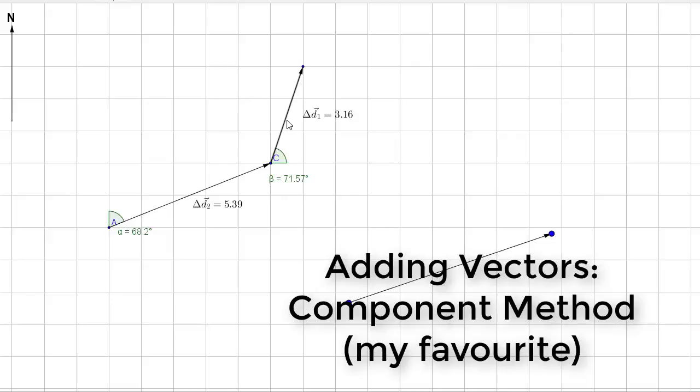Then you take the one that you are adding to it, and in this case it's a displacement vector, and you draw that one tip to tail. Then to find out what the ultimate result is, you're going to join the tail of your first vector to the tip of the second vector. And this is the resultant vector, this is the resultant displacement vector.